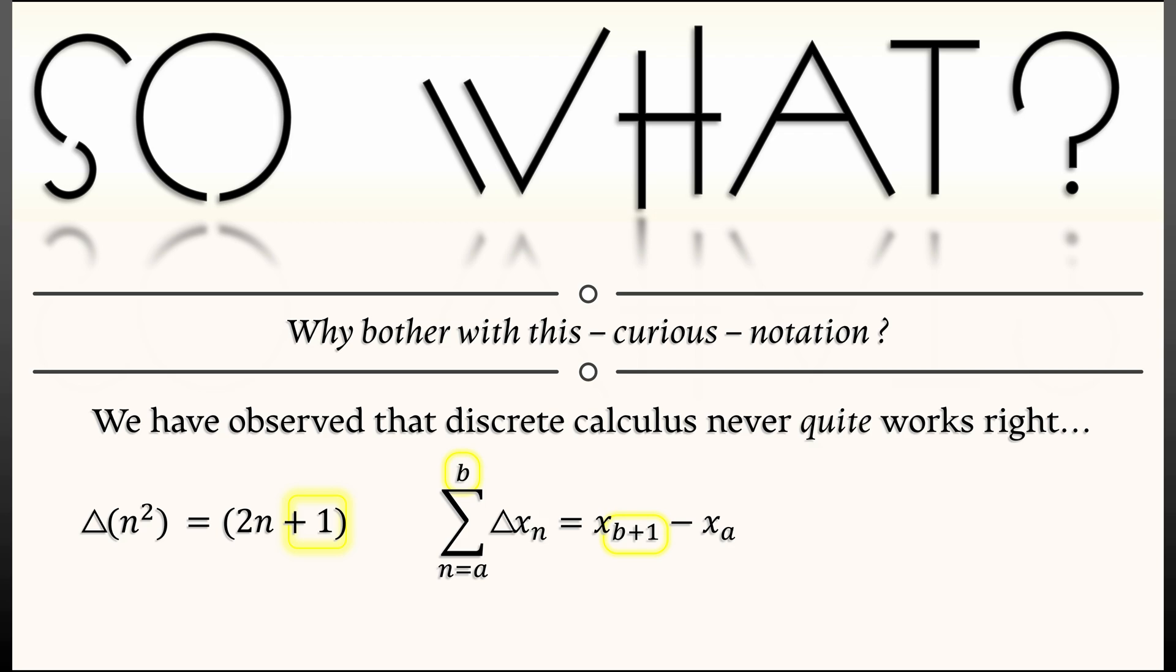If we make this a little bit more concrete, if we take the sum as n goes from 0 to capital M of n, or if you like n to the 1, what should the integral of n to the 1 be? Well, it should be, I don't know, 1 half n squared evaluated from 0 to m?